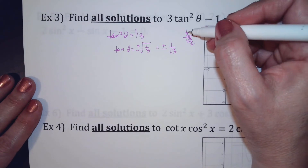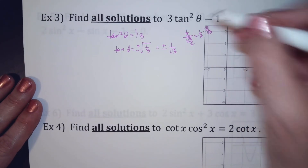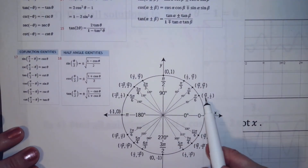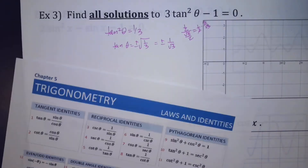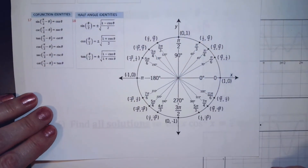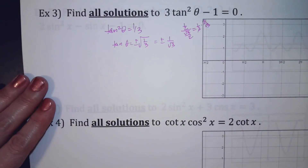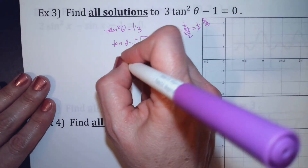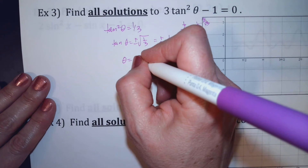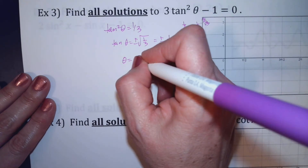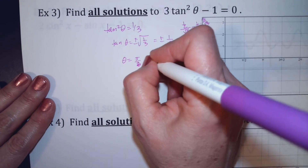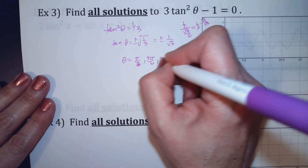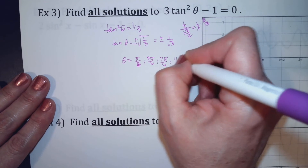So go back to your unit circle — when is radical 3 over 2 the x value? It's here and here, and it was plus or minus. So I'm going to say all the same answers as the last problem: theta equals pi over 6, 5pi over 6, 7pi over 6, and 11pi over 6. But this question says all solutions.